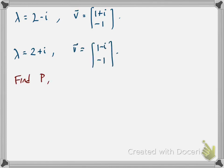Then, the complex conjugate 2 + i has corresponding eigenvector [1-i; -1]. So I just took the complex conjugate of the other eigenvector.